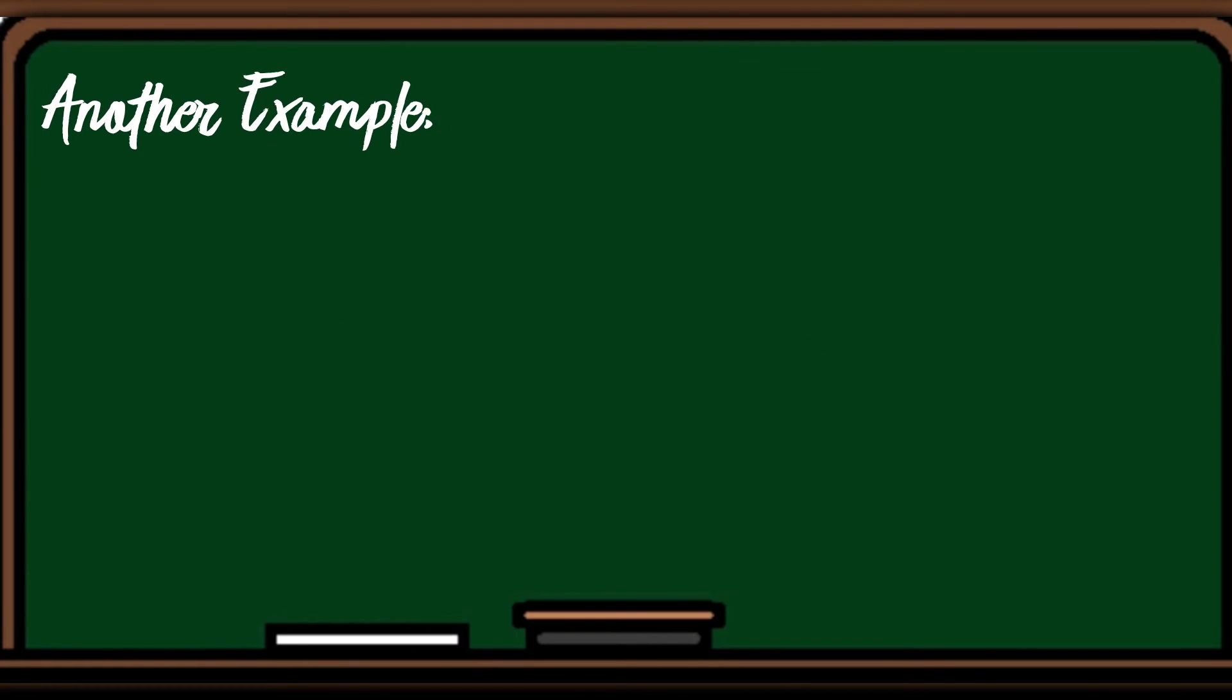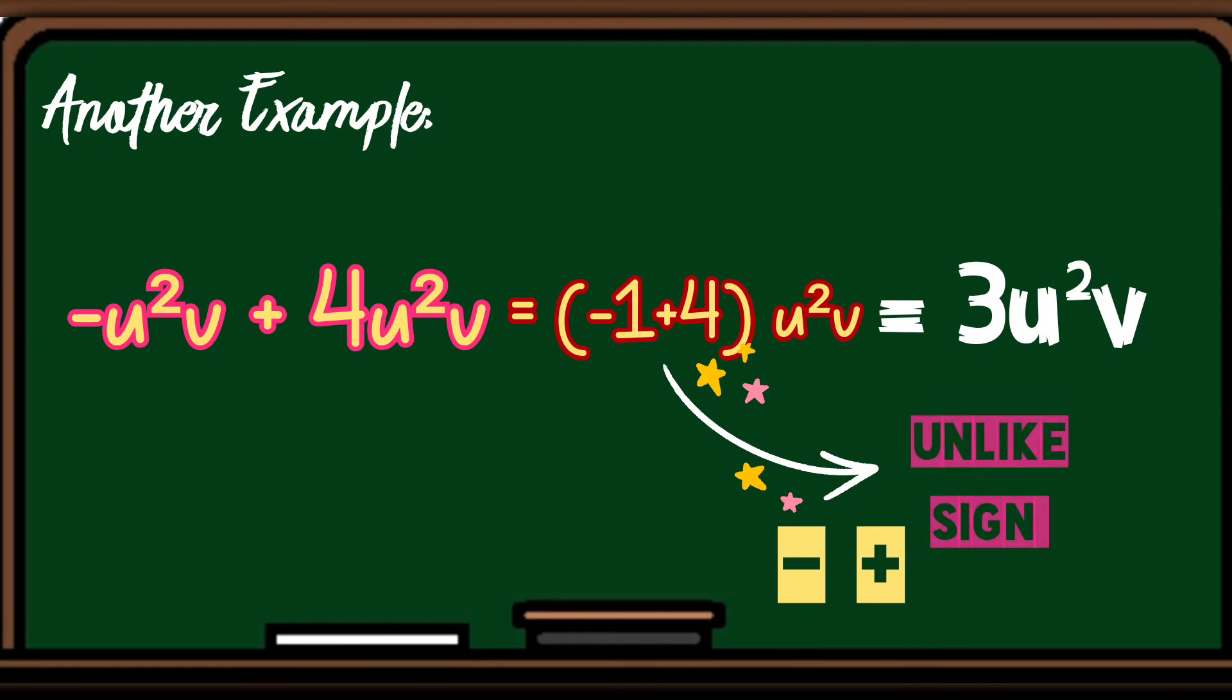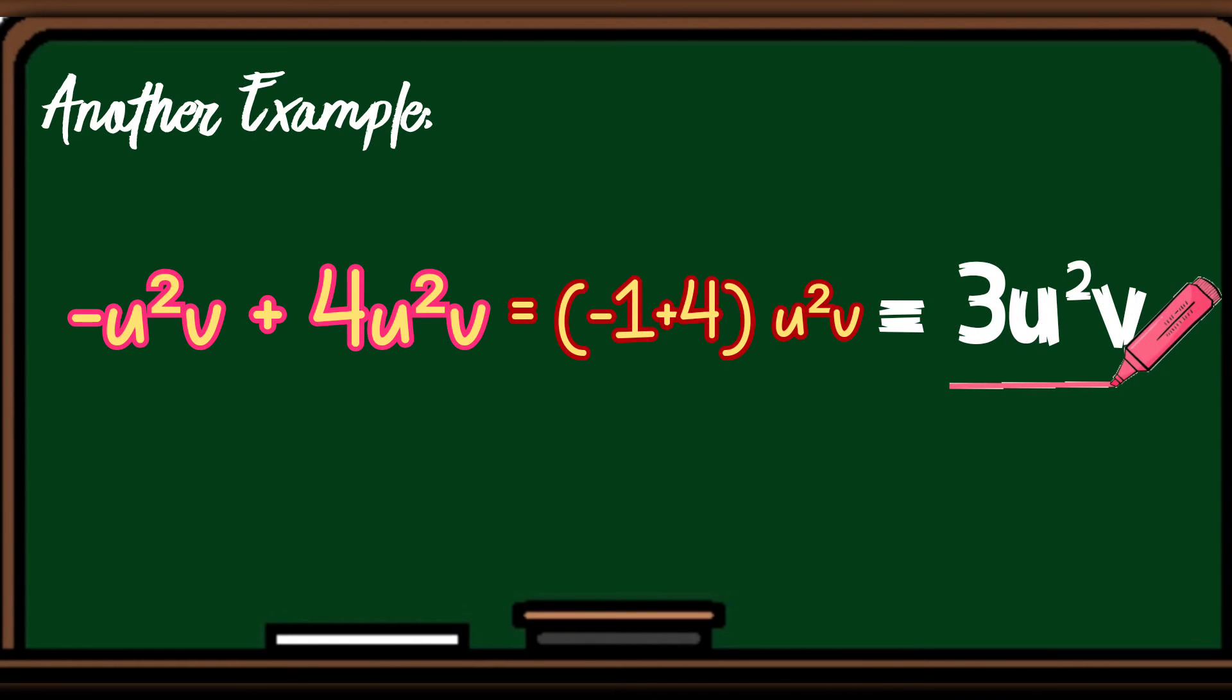Another example, negative u squared v plus 4u squared v is equivalent to, pagsamahin muli natin ang mga number, so open and close parentheses, negative 1 plus 4, then copy the variable u squared v is equivalent to 3u squared v. Bakit naging 3? Kung mapapansin natin, unlike sign ang negative 1 plus 4, ang isa ay negative, ang isa ay positive, automatically, siya ay magma-minus and copy the sign of the bigger number. So, ang sagot dito ay 3u squared v.